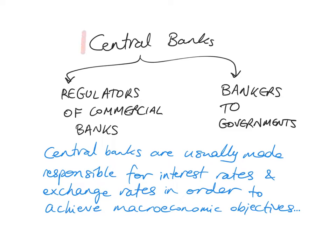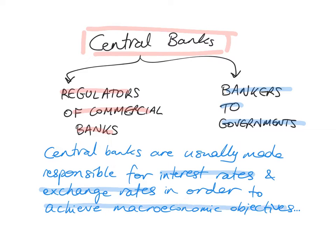Every country has a central bank. The central bank acts as the regulator of commercial banks — someone has to regulate those commercial banks, supervise them, and make sure they are not abusing customers. But the central bank also acts as the banker to the government. Central banks are usually made responsible for interest rates and exchange rates in order to achieve macroeconomic objectives.